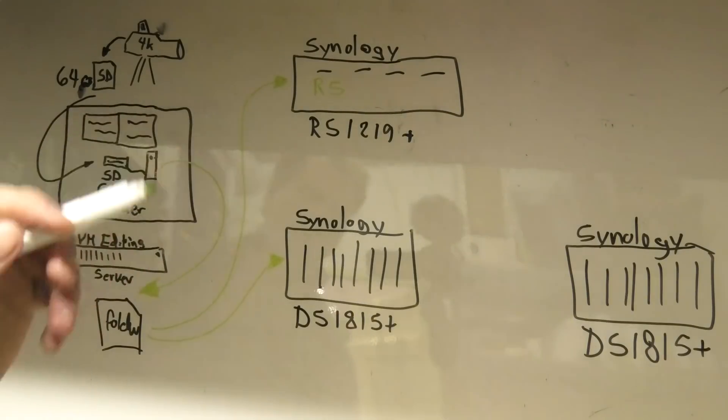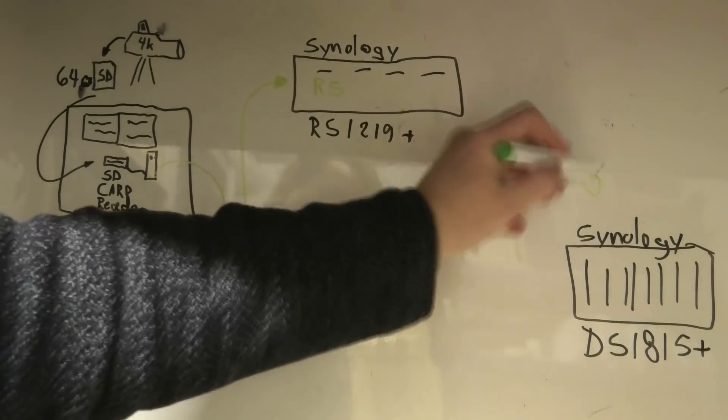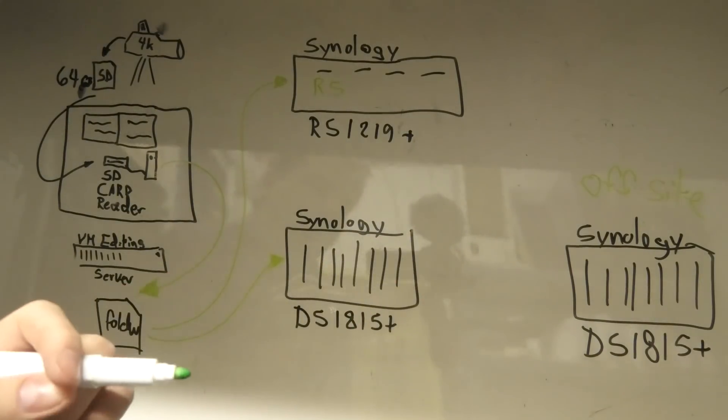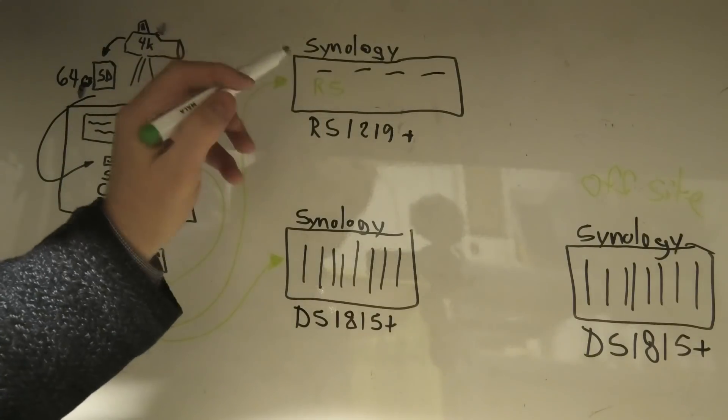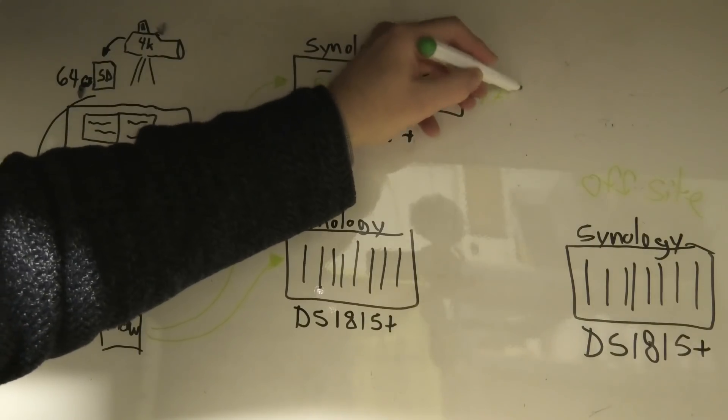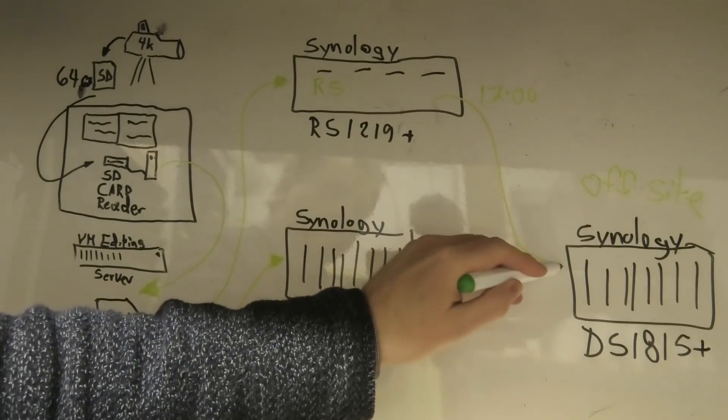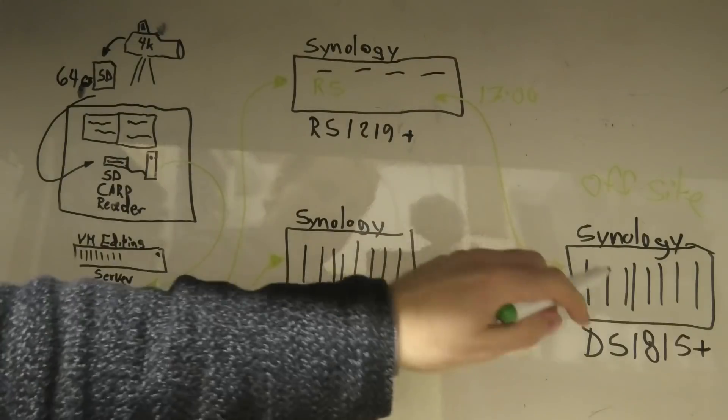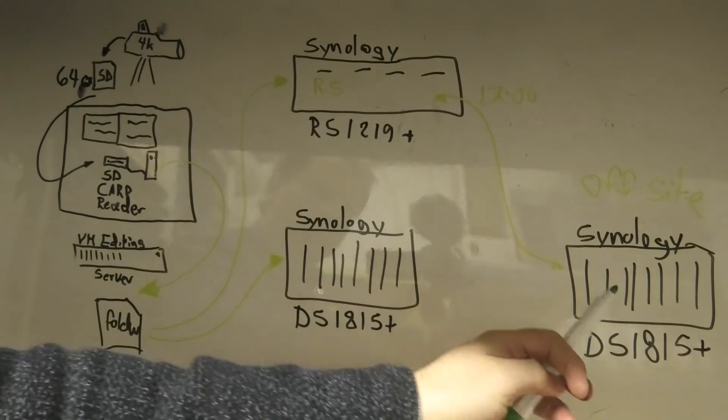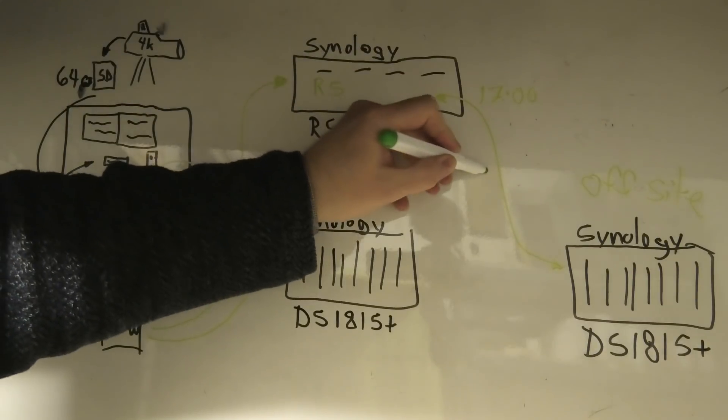Then I have actually set up an automatic copy from this Synology box to an off-site Synology that is not at my playhouse. It's somewhere else. And every day at five o'clock, that's 1700 hours here, this Synology box will communicate with this Synology box and tell this Synology box if there's anything new for it. This folder up here, if anything is new that this Synology box down here does not have, it will copy that over here.